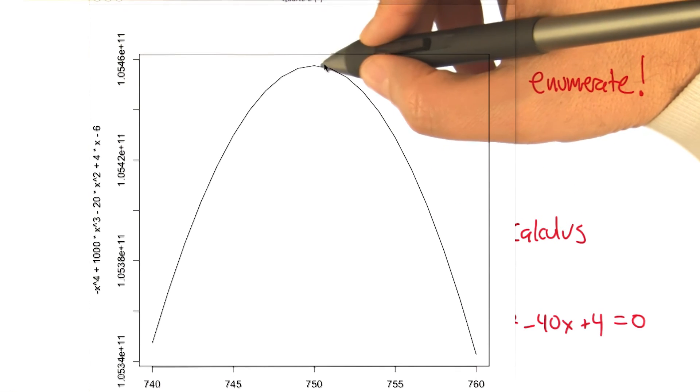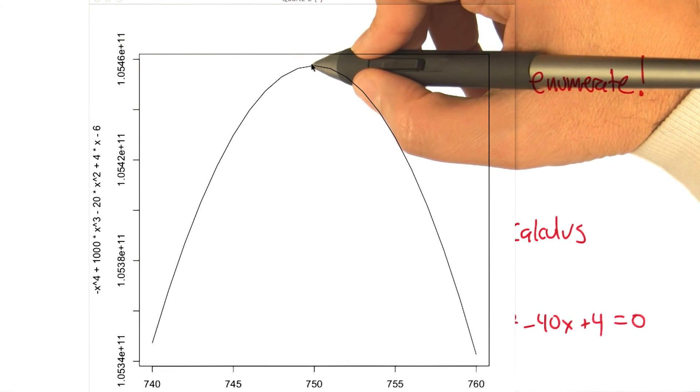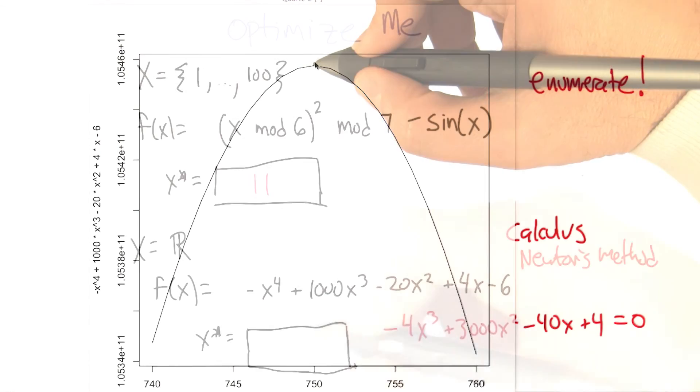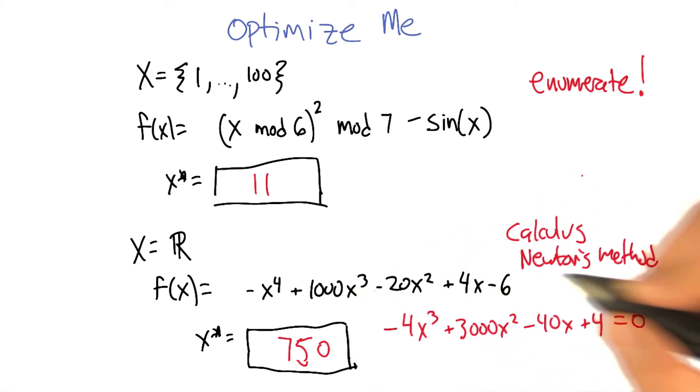And that'll allow us to hone in. As we get closer and closer to the top, the slope is going to flatten out. We're going to take smaller steps. And this process converges to whatever the peak is. I think it's a little bit under 750. That looks about right.